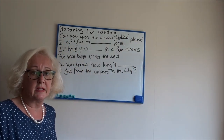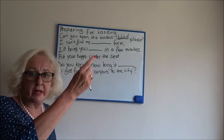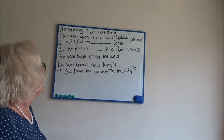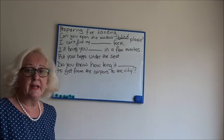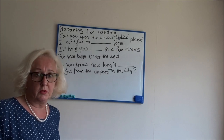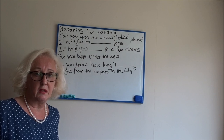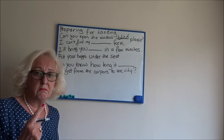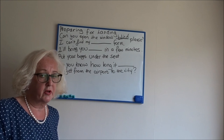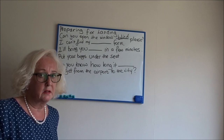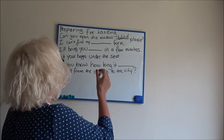Because you're coming in for landing and, as you should know, all the window blinds need to be open. Next one: 'I can't find my something form.' What would you think that would be? Think about when you're flying into another country — what do you normally need? Immigration form.